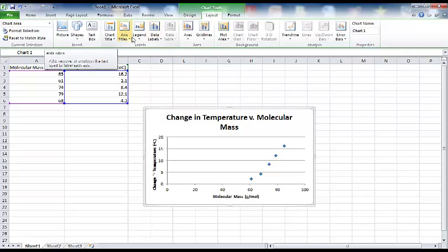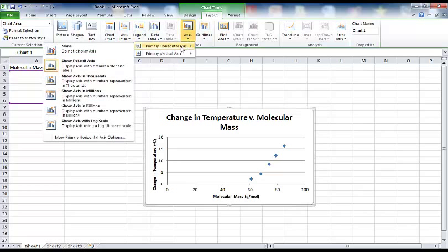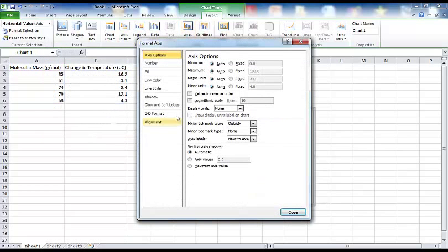You will need to go to the axes box and change the x-axis, which is the horizontal axis. And the easiest way to do that is to go to more primary horizontal axis options.